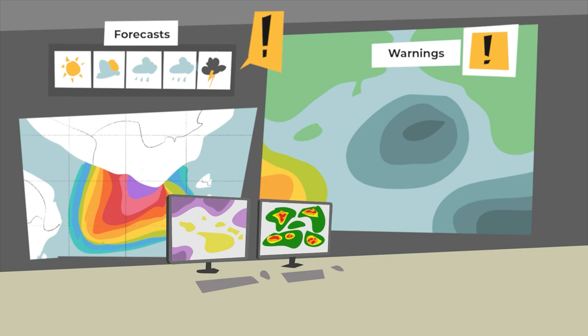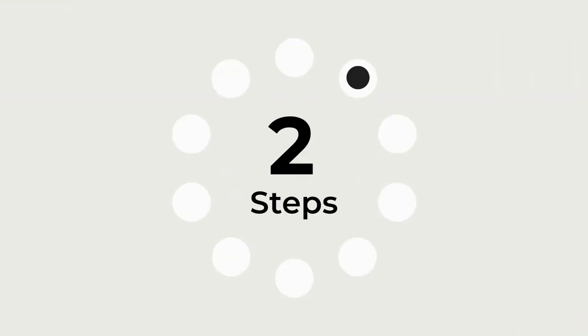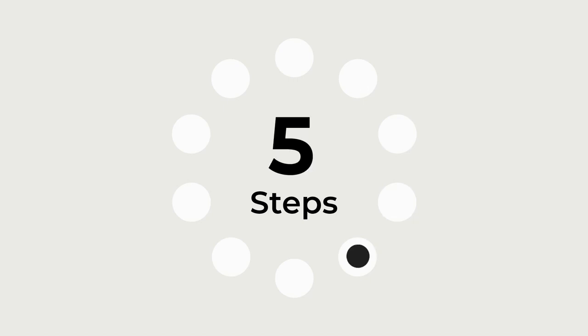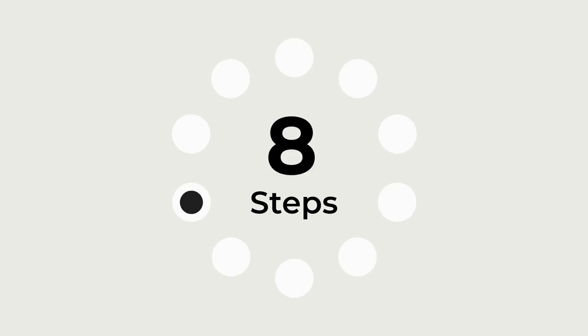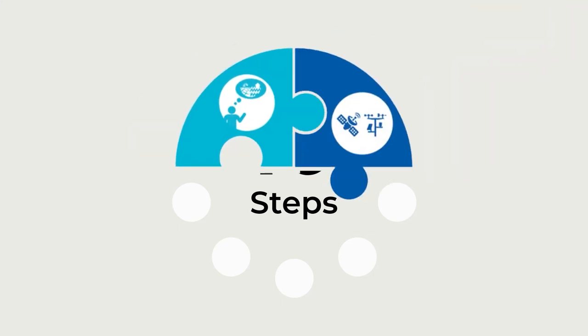Based on tried and trusted early warning systems already operating in some parts of the world, the guidelines offer 10 simple steps countries can use to establish their own coastal inundation forecasting early warning system.